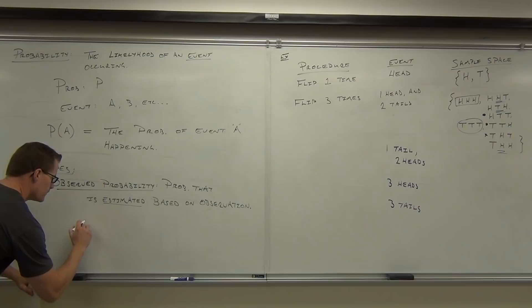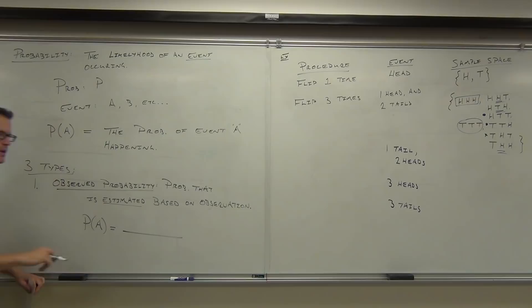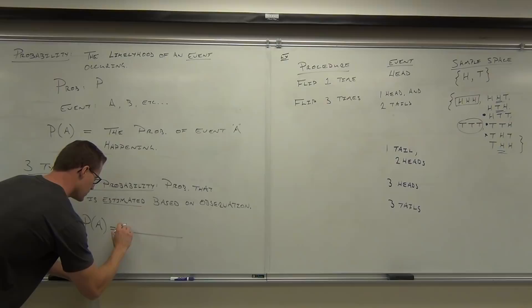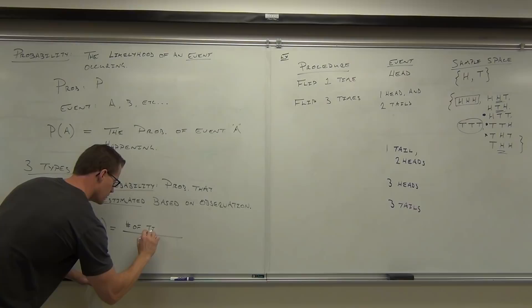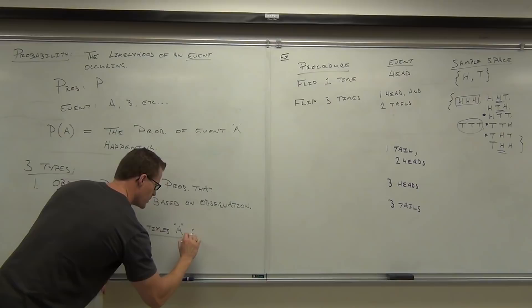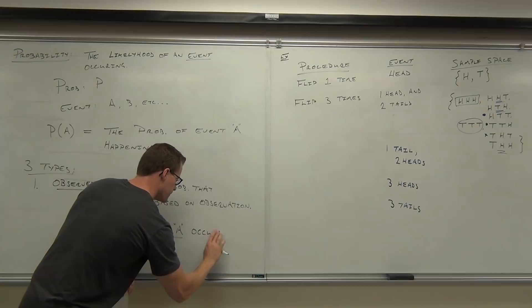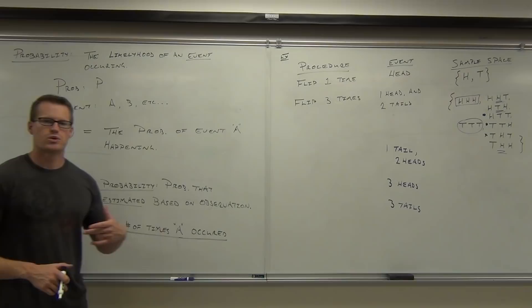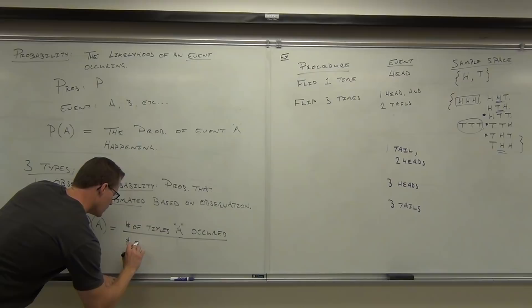It's not too hard to figure out. To find the probability of event A, you take the number of times A occurred divided by the number of times you performed that procedure. Number of times A occurred — remember, A is your event — divided by the number of times your procedure was repeated.